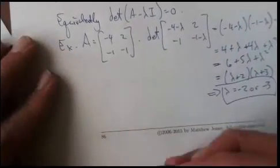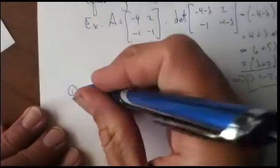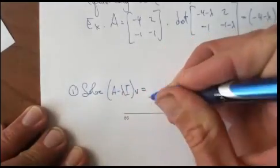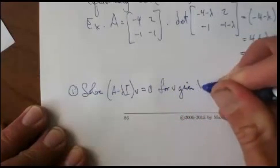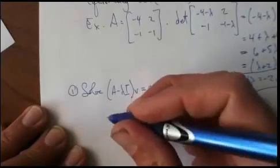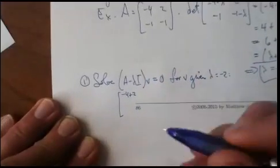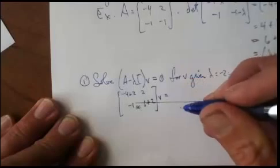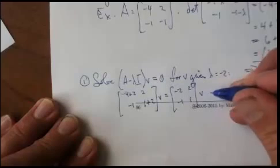Let's find the eigenvectors. To do that, we've got two of them, so we'll have to do this thing twice. What I'm going to do is solve A minus lambda I times some vector V, which will be an eigenvector, equals 0 for V, given lambda equals negative 2. If lambda equals negative 2, then you have, this is going to be negative 4 plus 2, lambda is negative 2, and then I've got a negative 1, and a 2, and a 1 plus 2 times V. This will be negative 2, 2, negative 1, 1, times V, and I'm setting this equal to 0.